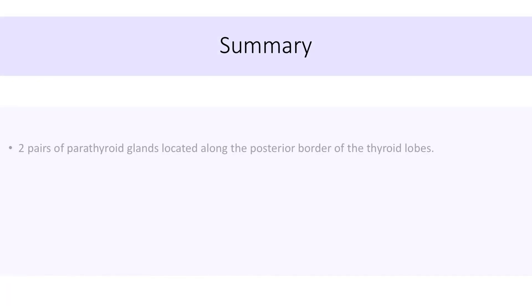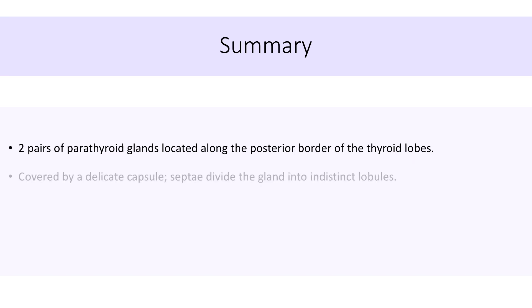Quickly recollecting what we have seen: two pairs of parathyroid glands are located along the posterior border of the thyroid lobes. Each parathyroid gland is covered by a delicate capsule which sends in septae, but the gland is divided into indistinct lobules.